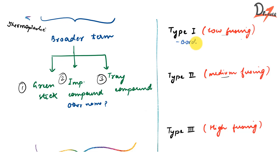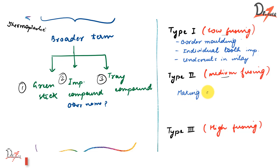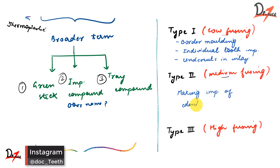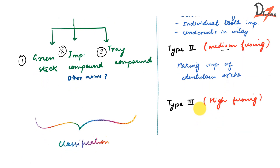Type 1 (low fusing) is used for border molding, for individual tooth impressions, and also to check undercuts in inlay preparation. Type 2 (medium fusing) is used for making impressions of edentulous arches.